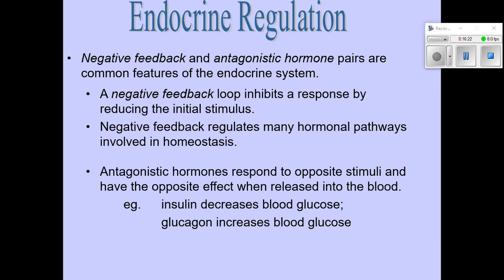Regulation in biology is hugely important. We'll talk about a couple of different ways that the endocrine system is regulated. A huge one is negative feedback — we're going to come across many, many examples of negative feedback. And the other one, with just a couple of examples, is antagonistic hormones: one hormone does one thing, the other hormone does exactly the opposite.